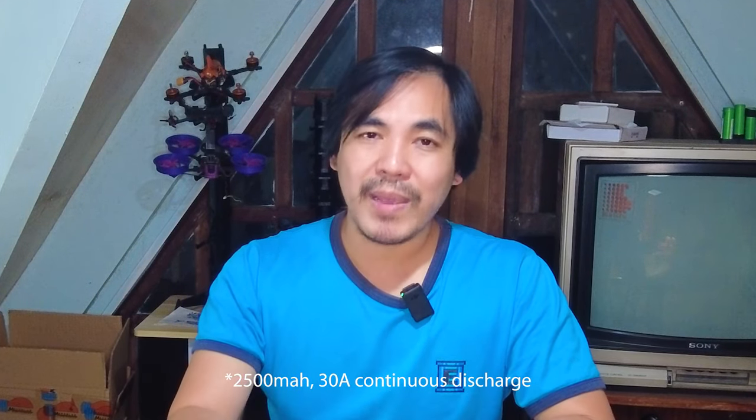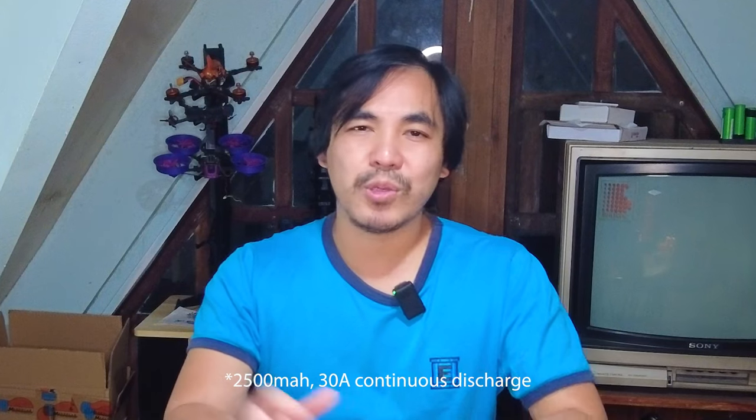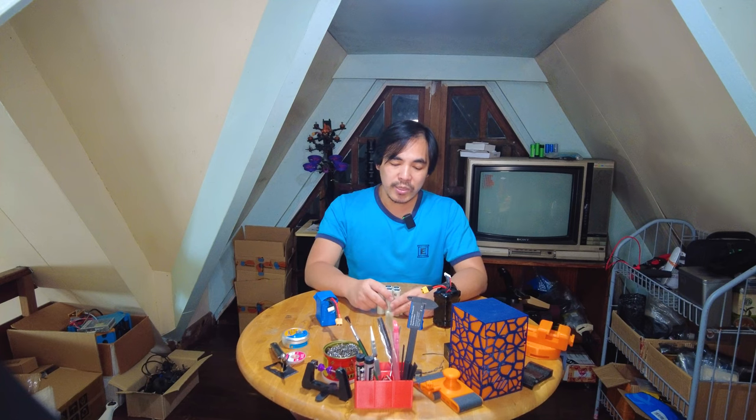I prefer the VTC 5A. It has slightly less capacity at 2,600 milliamp hours, but it packs a punch at around 25 amps I think. So today we are going to be using these P42A to build something a little bit bigger, a little bit heavier.